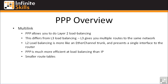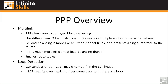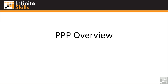This has the net effect of giving you smaller routing tables where you have multiple PPP links between routers. Finally, loop detection. LCP sends a randomized magic number in the LCP header. If LCP sees its own magic number come back to it, it knows the telco has put that line in a loop, and can flag that interface as looped — shutting it down, sending an alert to the administrator, or whatever configured options you have set up. And that concludes our overview of the Point-to-Point Protocol.